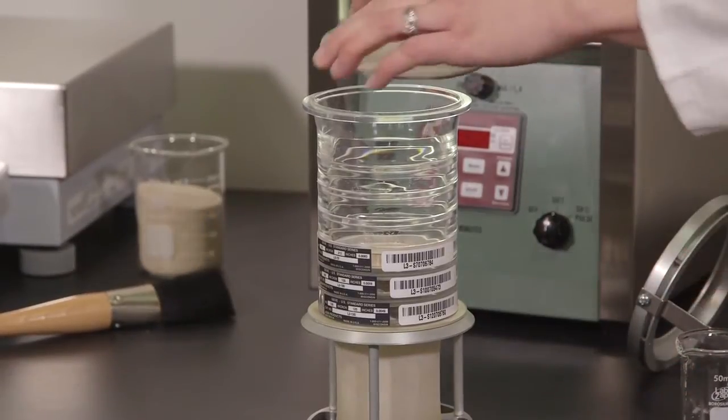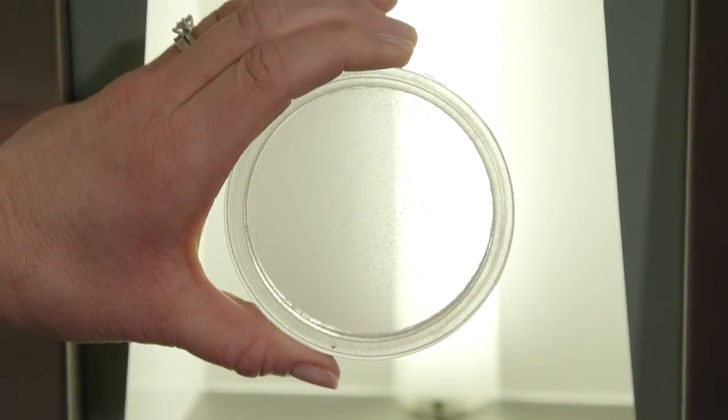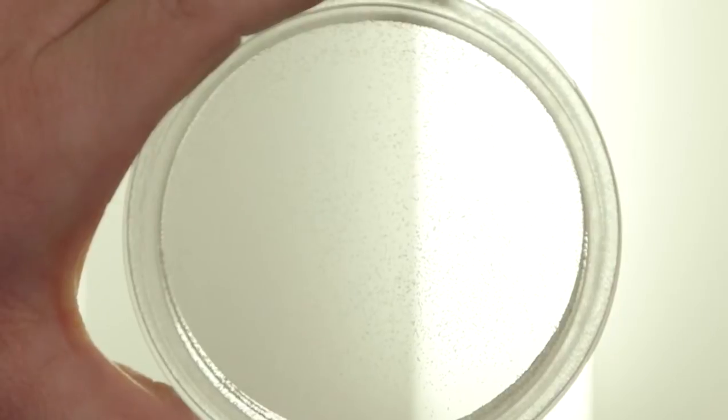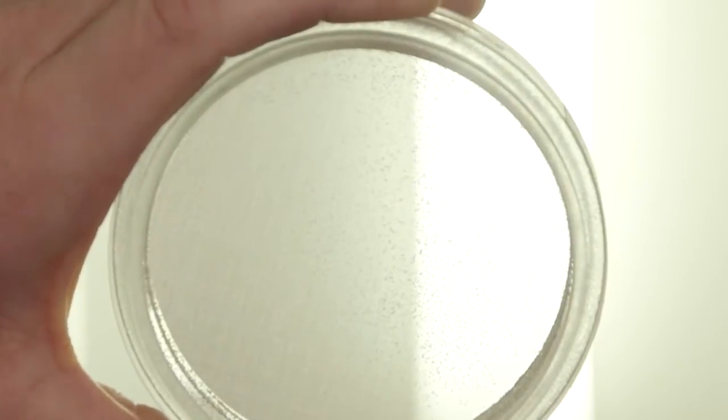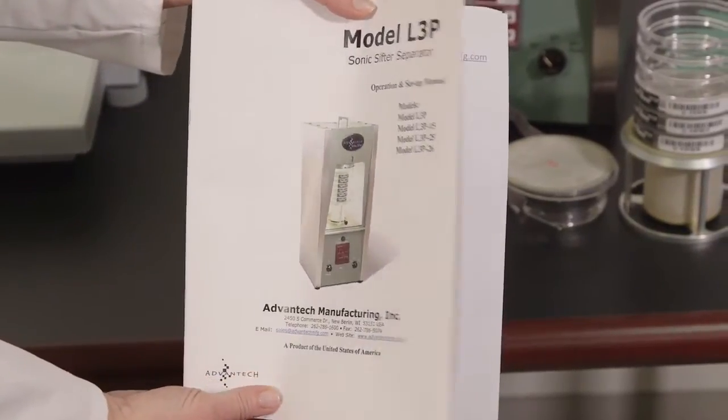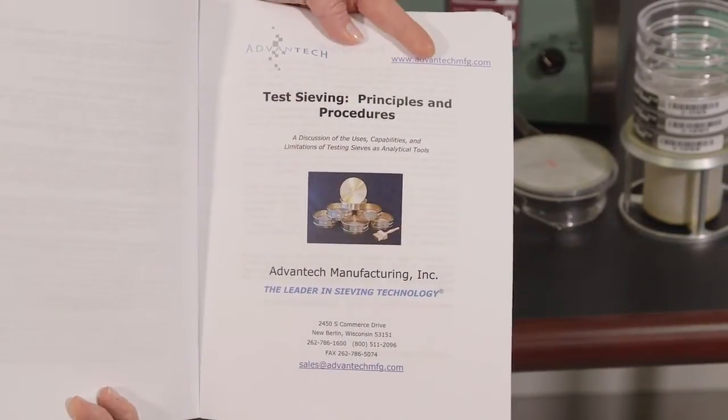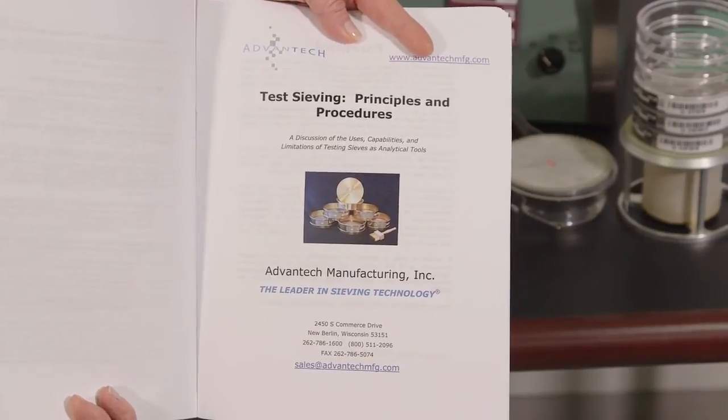Generally speaking, a smaller sample is better. Large samples will overcrowd the sieve and lead to blinding. Large samples may also yield inaccurate results, as not all particles will have equal opportunity to be passed or retained by the wire cloth openings. Refer to Chapter 6 of Test Sieving Principles and Procedures for tips on determining optimum sample size.